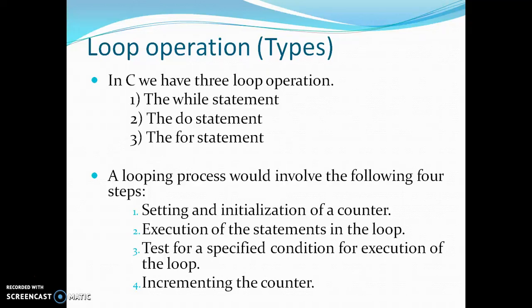These four steps are followed in the three types of loops: while loop, do-while loop, and for loop. The main use of the looping statement is that it is used when we need to execute one or more statements where some condition is specified. If the condition is true, the statement will be executed; if the condition is false, the program will exit. Based on this, there are some advantages of looping statements: it reduces the length of the program, it uses less memory space, and it reduces the complexity of the program.